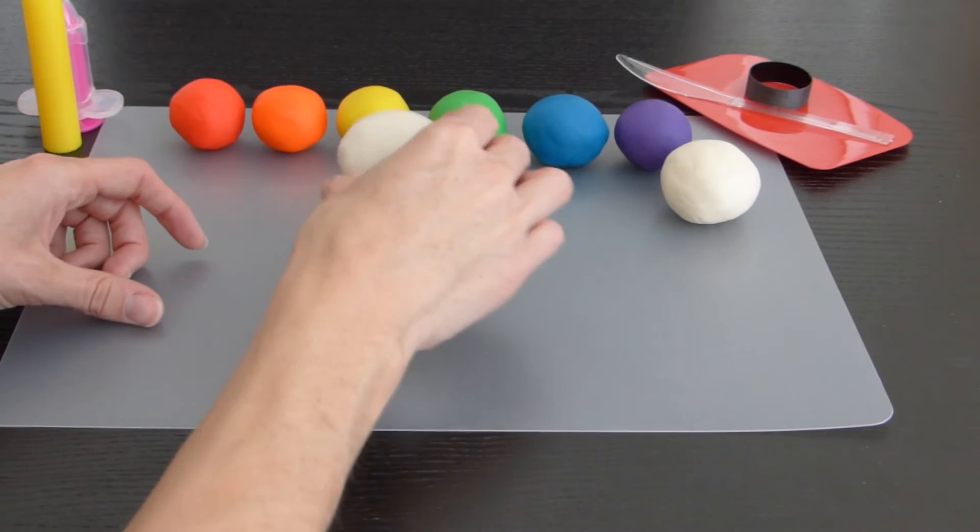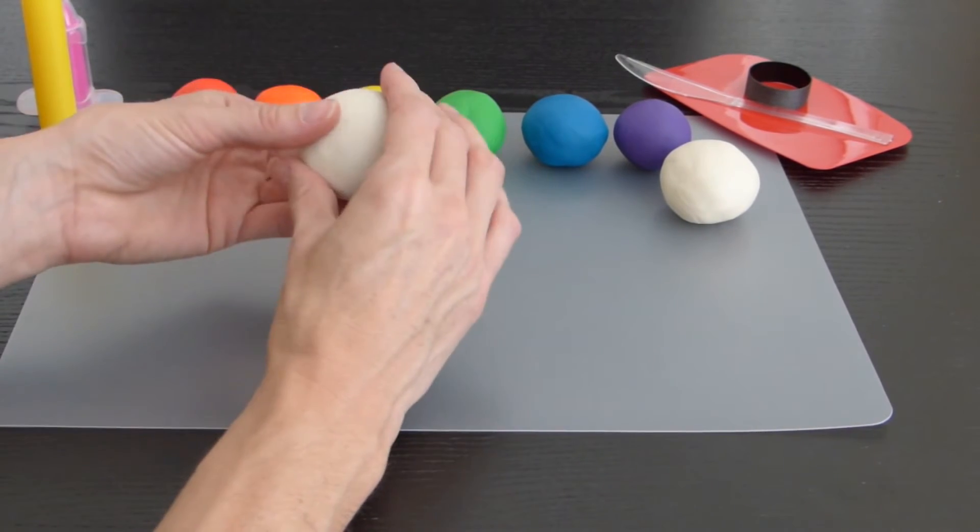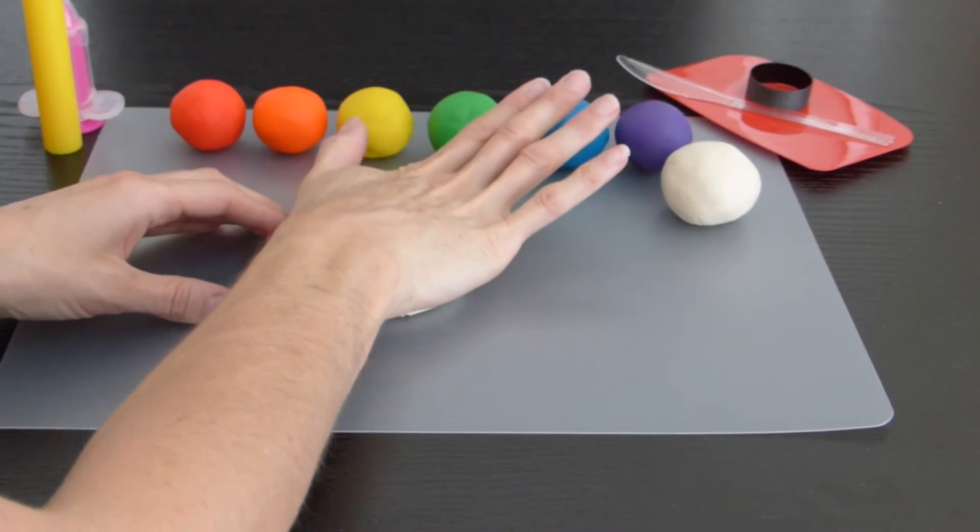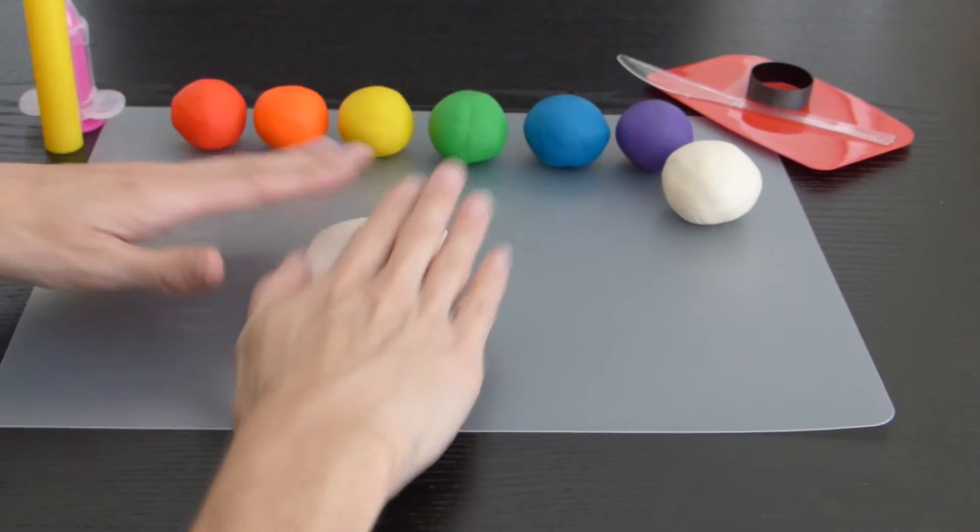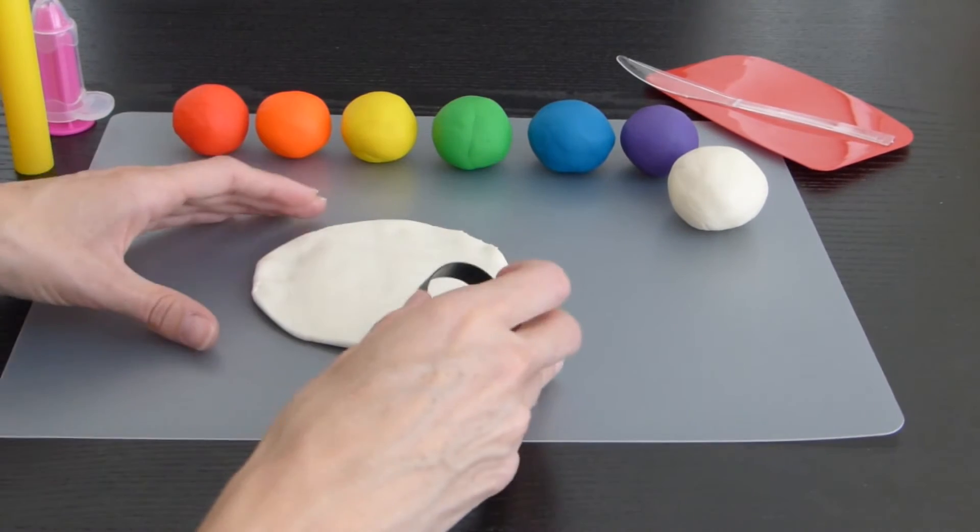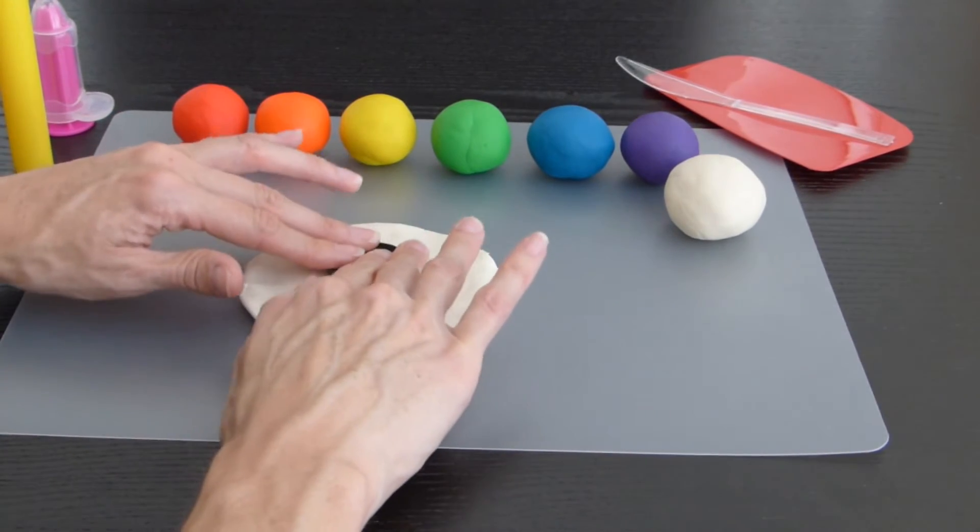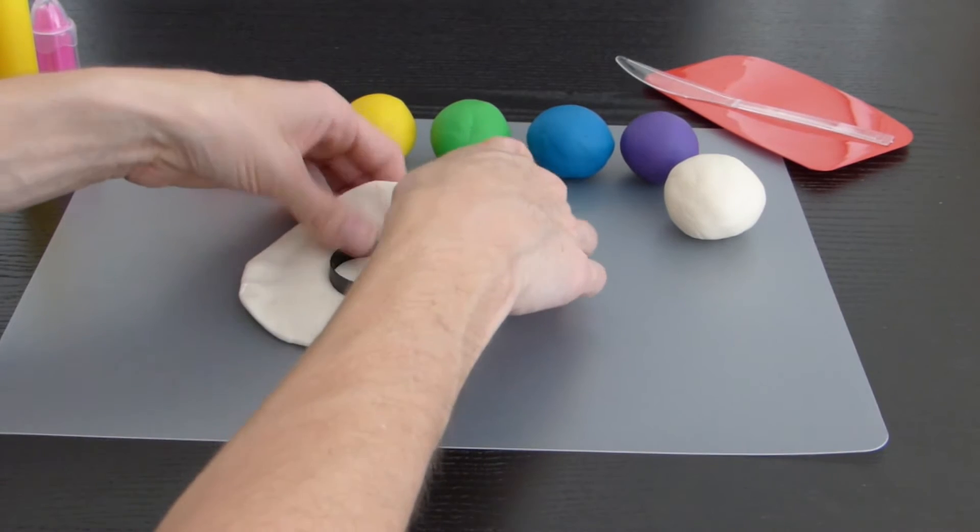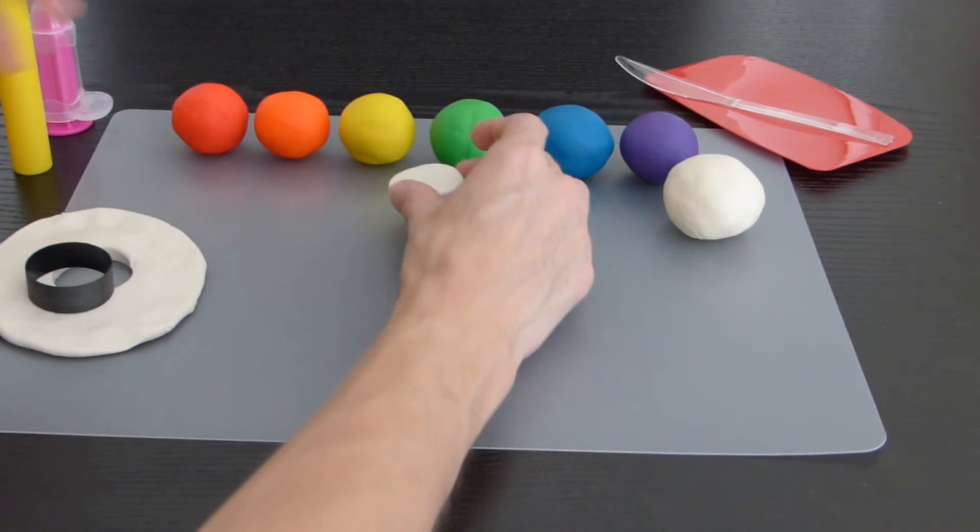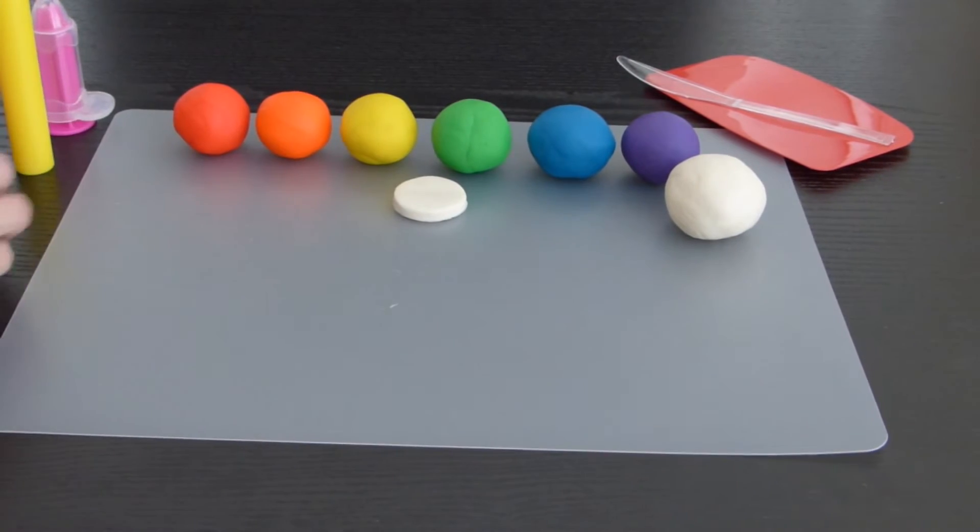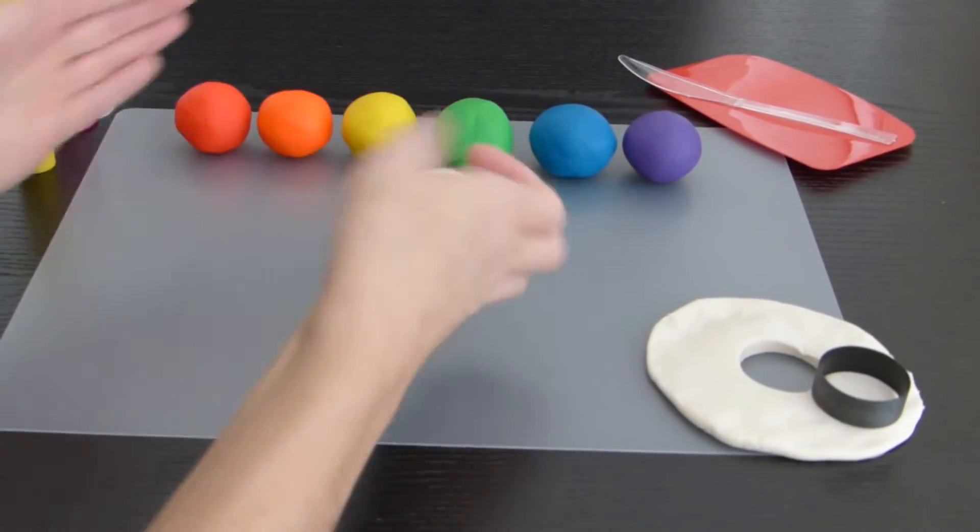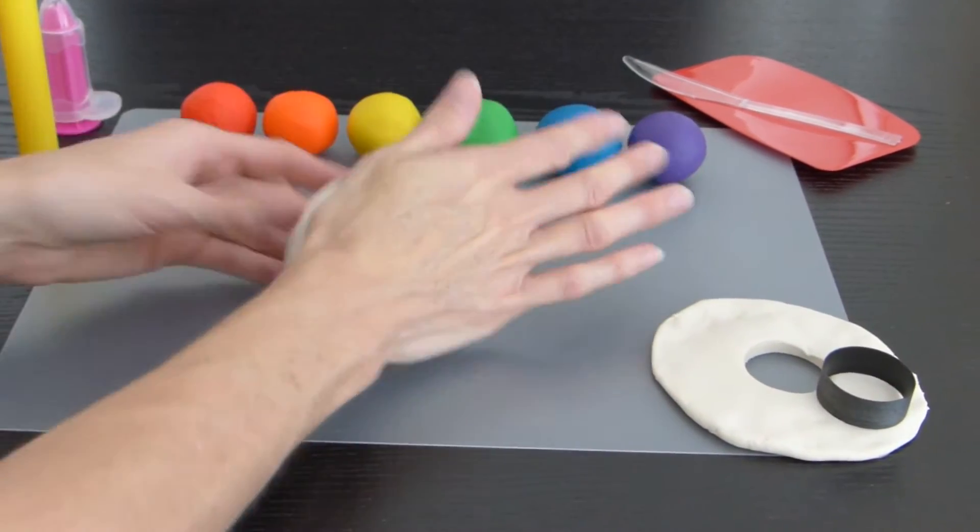Hey guys, today we're going to make rainbow play-doh ice cream in a bowl. To make the ice cream bowl, you'll roll out some white play-doh and cut out a small circle.